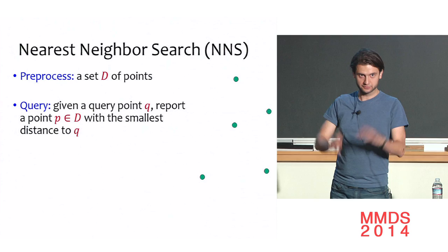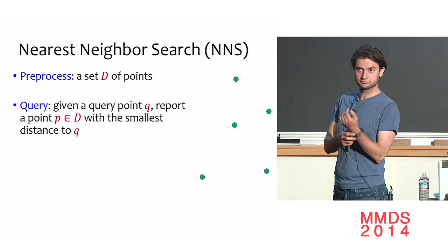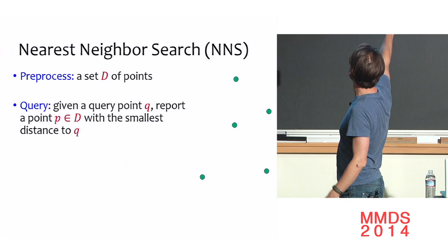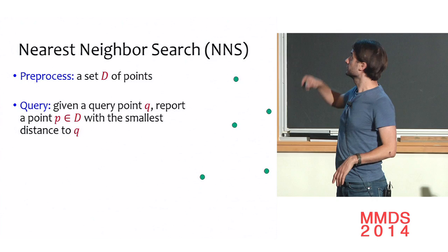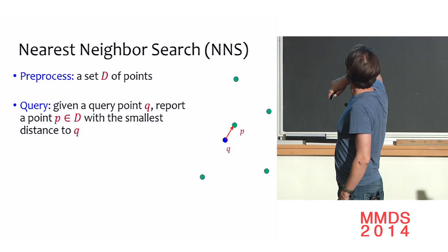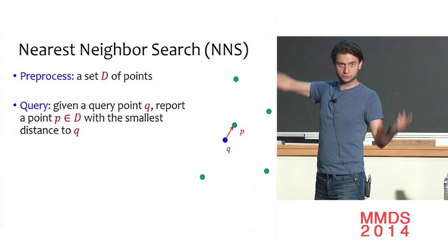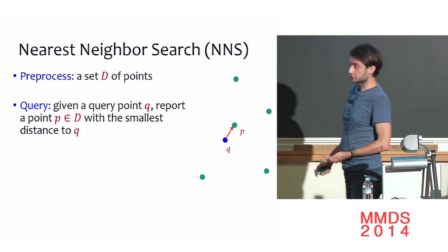The main problem I'll be talking about is nearest neighbor search. It's an algorithmic data structure question where we have a dataset D of points, let's say in Euclidean space, and we want to preprocess it so that later, given a query point Q, we can report the point closest to Q — hopefully faster than just going through all the points.